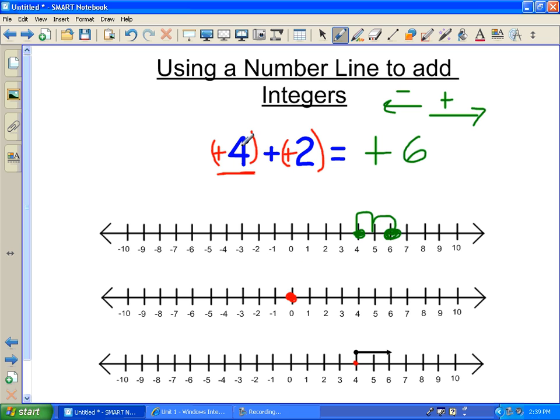First we're going to go positive 4, so I'm going to go 1, 2, 3, 4. And then we're going to add positive 2 more. So then we will add positive 1, positive 2 more, and we end up at plus 6, or positive 6.